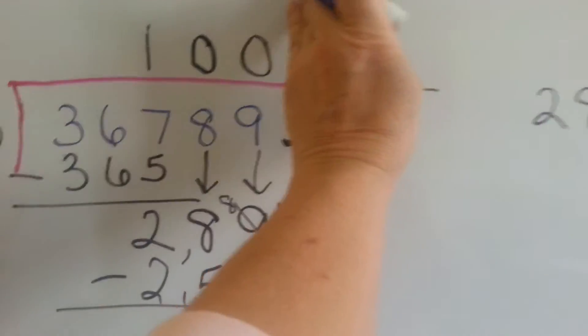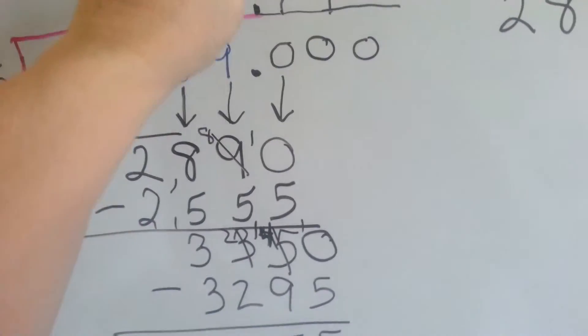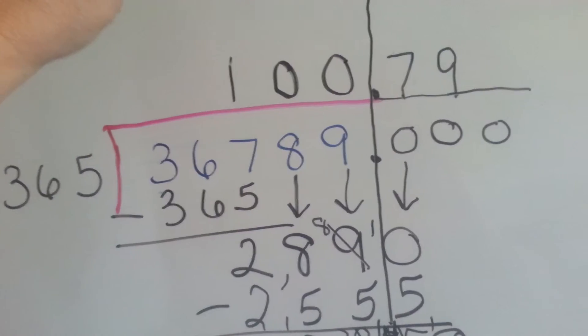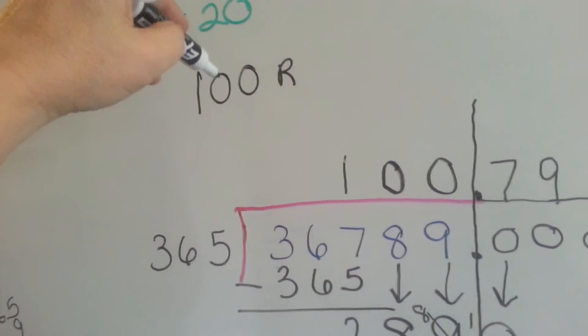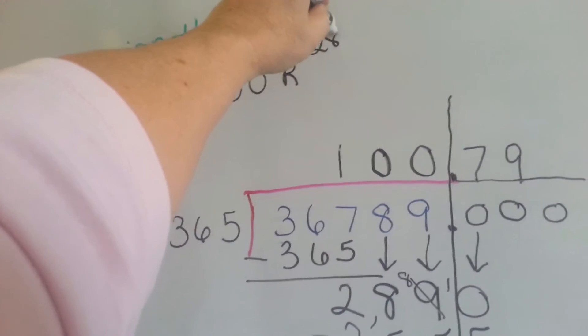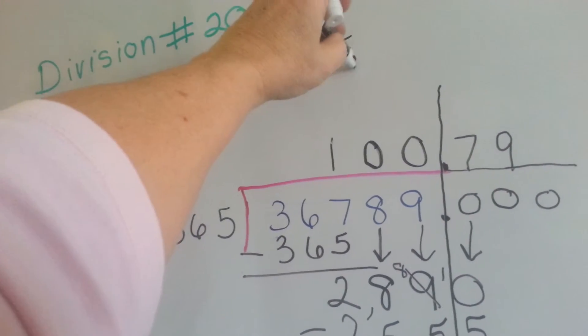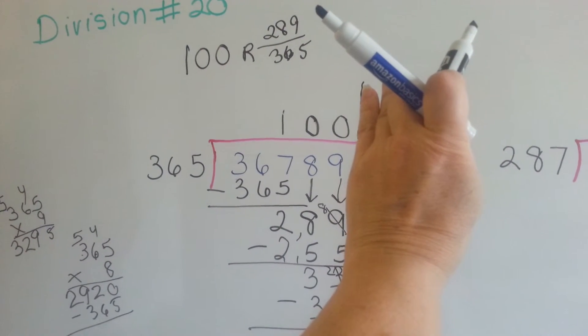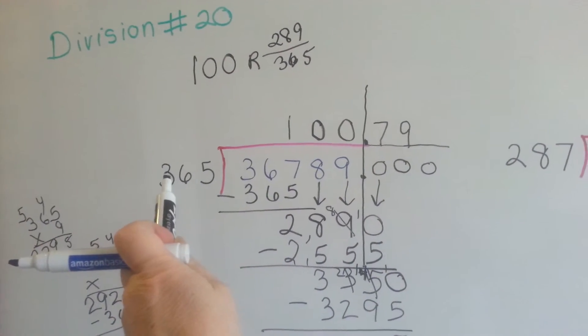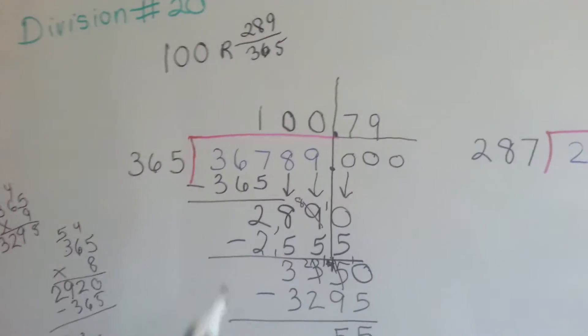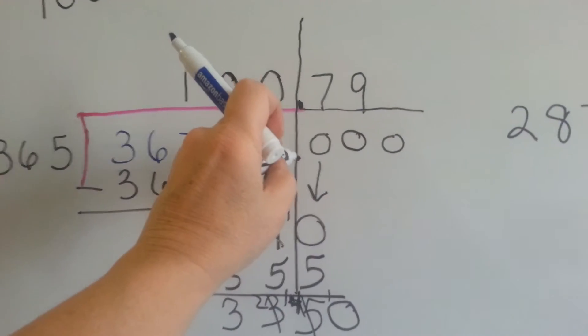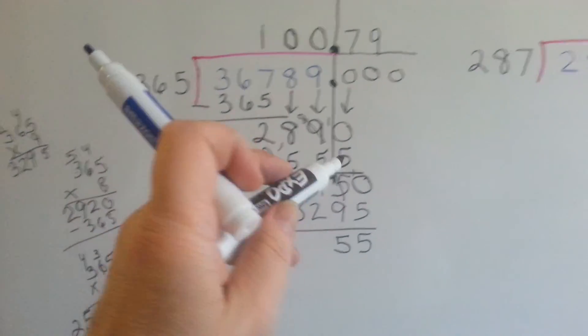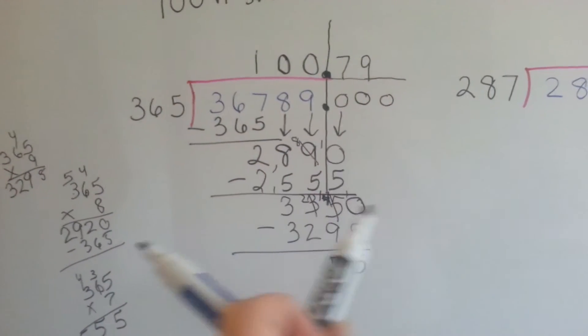So, if we stopped back here at the 100, if we stopped here, our answer would have been 100 with remainder 289 over 365. If we didn't add the zeros, that would have been the answer. 289 as the numerator and 365 as the denominator. We can keep on adding zeros as long as our decimal points are lined up nice and pretty on top of each other like that. And you can keep doing multiplication on the side and keep coming down, trying to get an even number if you want.